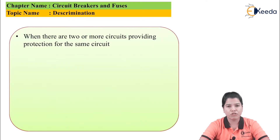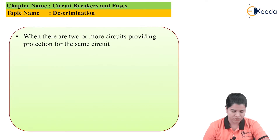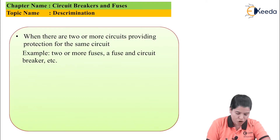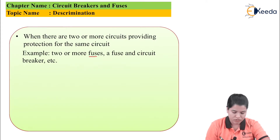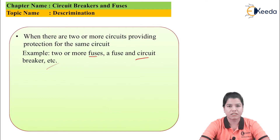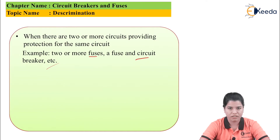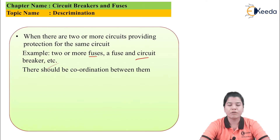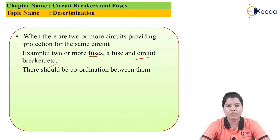When there are two or more circuits providing protection for the same equipment — for example, a combination of two or more fuses, or a fuse and a circuit breaker — then there should be coordination between them. The meaning of coordination is that it must be clear which equipment should protect the motor or the generator first.